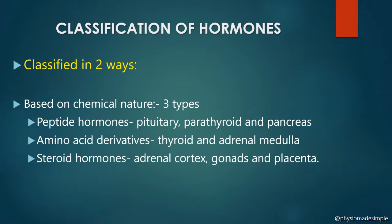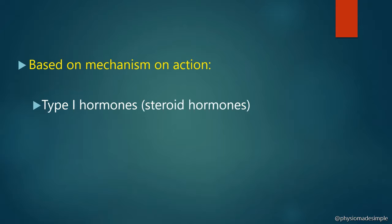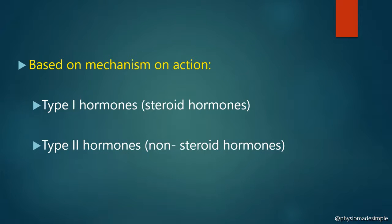Based on their mechanism of action, hormones are classified into two types: Type 1 hormones and Type 2 hormones. Type 1 hormones are steroid hormones, and Type 2 hormones are non-steroid hormones, including peptide hormones and amino acid derivatives.